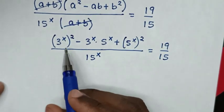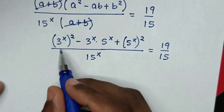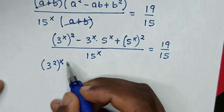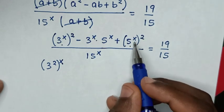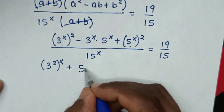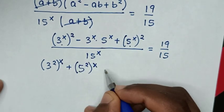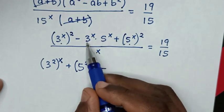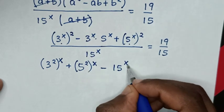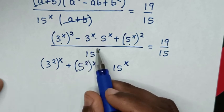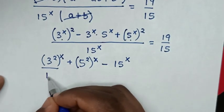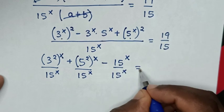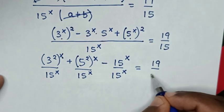In the next step, we take the power 2 inside the bracket, so (3^x)² becomes 3² to the power of x, and similarly (5^x)² becomes 5² to the power of x. Also, 3^x times 5^x equals 15^x. We then divide each term by 15^x, giving 3²^x over 15^x, plus 5²^x over 15^x, minus 1, equals 19 over 15.